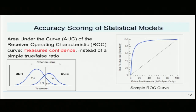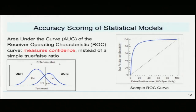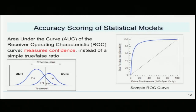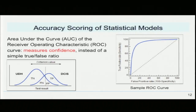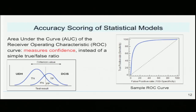After obtaining our six machine learning algorithms, we needed a reliable way of determining the accuracies of our models. We decided to use the area under the receiver operating characteristic curve, or the AUC of the ROC curve for short. This scoring model allows us to determine the accuracy of the model and its confidence, instead of a simple true-false ratio, giving us a more detailed understanding of our model's performance.